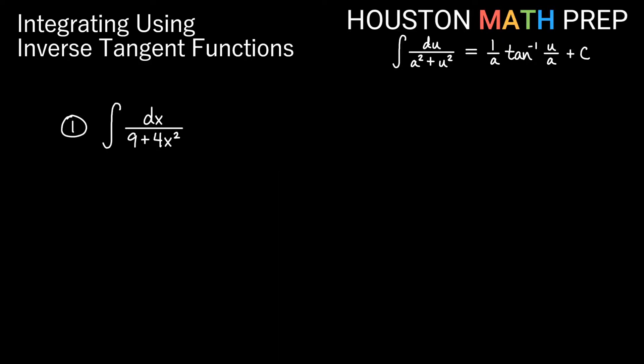Looking at our first one here, the integral of dx over 9 plus 4x squared. So looking at this here in our formula, remember that a is just some constant expression and u is some expression that involves our variable of integration. When I look over here, I should be able to see the 9 is the a squared part and the 4x squared contains variables, so that is the u squared part. So I know that this is going to be a squared plus u squared on the bottom.